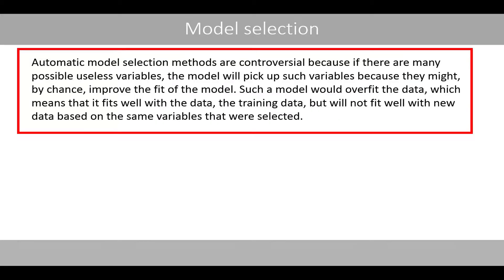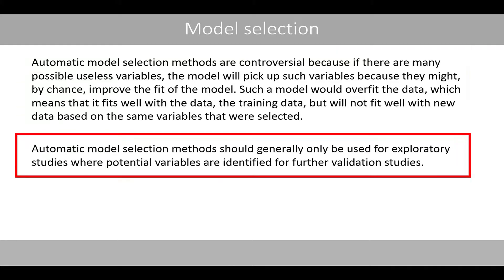Automatic model selection methods are controversial because if there are many possible useless variables, the model will pick up such variables because they might by chance improve the fit of the model. Such a model will overfit the data, which means that it fits well with the training data, but will not fit well with new data based on the same variables that were selected. Automatic model selection methods should generally only be used for explanatory studies where potential variables are identified for further validation studies.